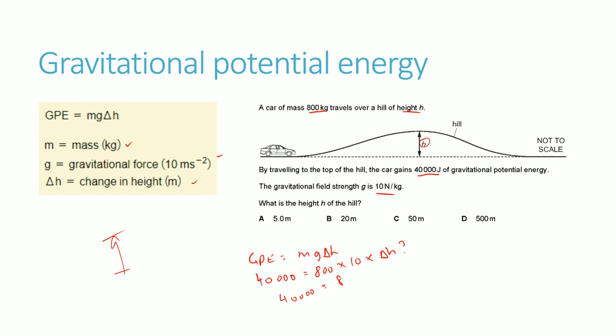Rearranging the formula: 40,000 equals 8,000 times the change in height. To get rid of the 8,000 on the right-hand side, divide both sides by 8,000. What you get is 5 — so the height of the hill is 5 meters. That's how you calculate gravitational potential energy problems.